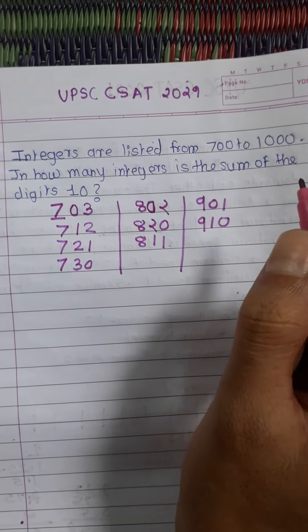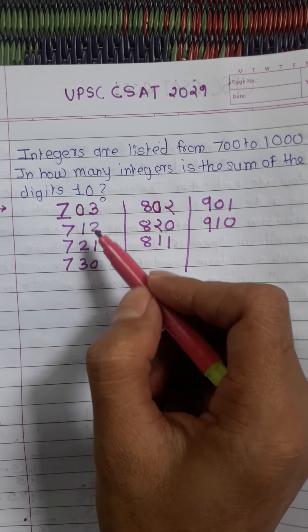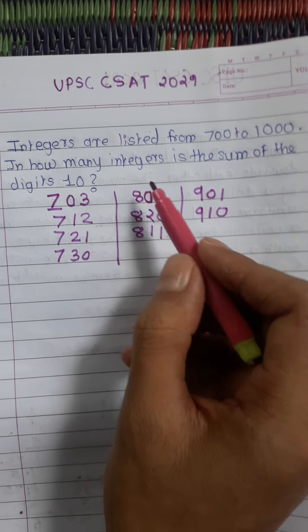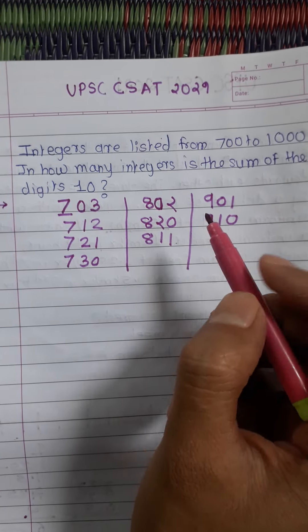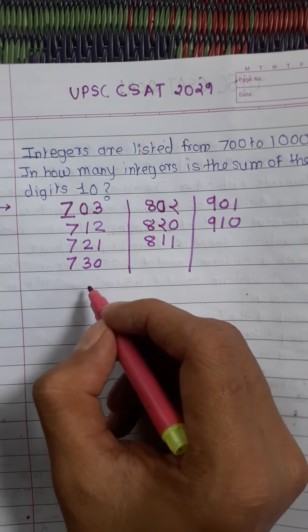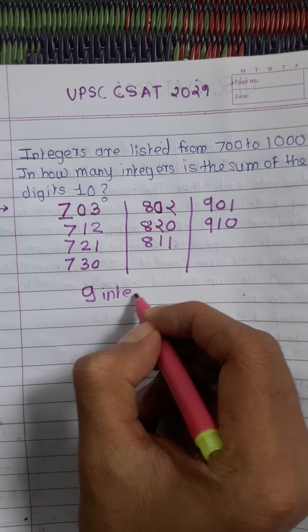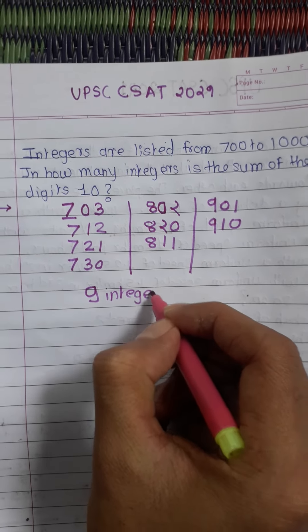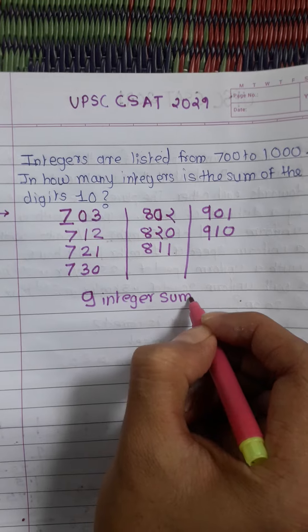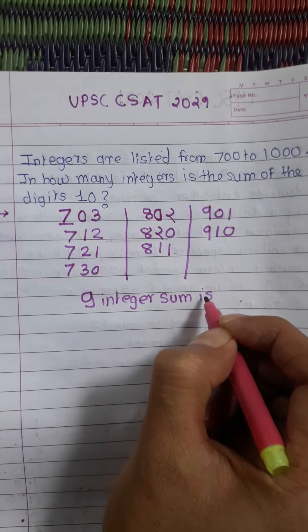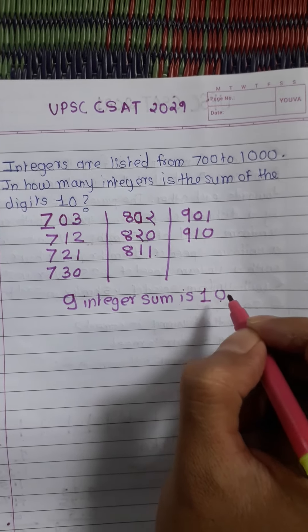Therefore, counting: 1, 2, 3, 4, 5, 6, 7, 8, 9... there are 49 integers whose digit sum is 10.